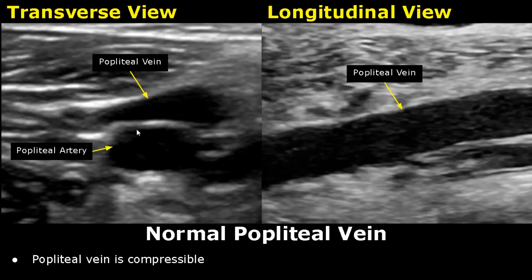Here is a transverse view showing the popliteal vein. The vein is compressible and will collapse when we apply probe pressure, whereas the artery will be pulsatile and is not compressible. And this is a longitudinal view of the popliteal vein.